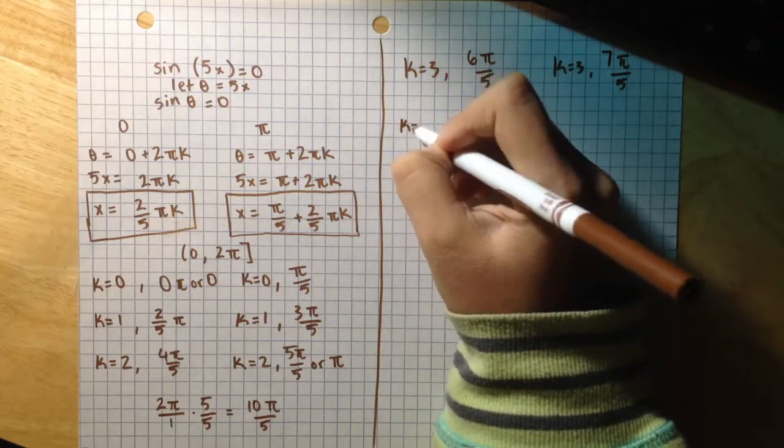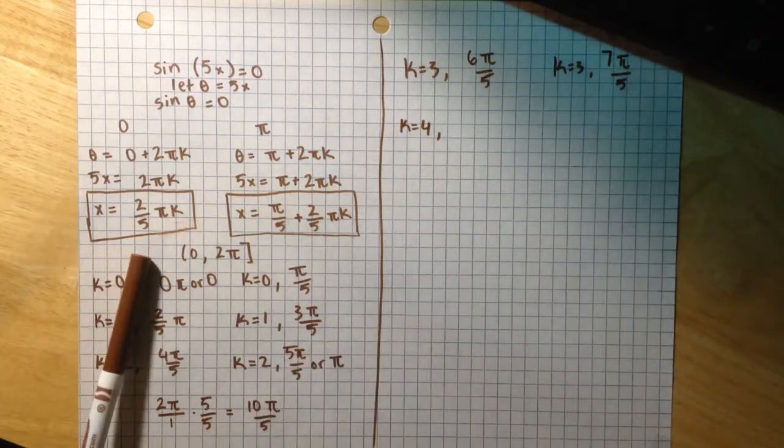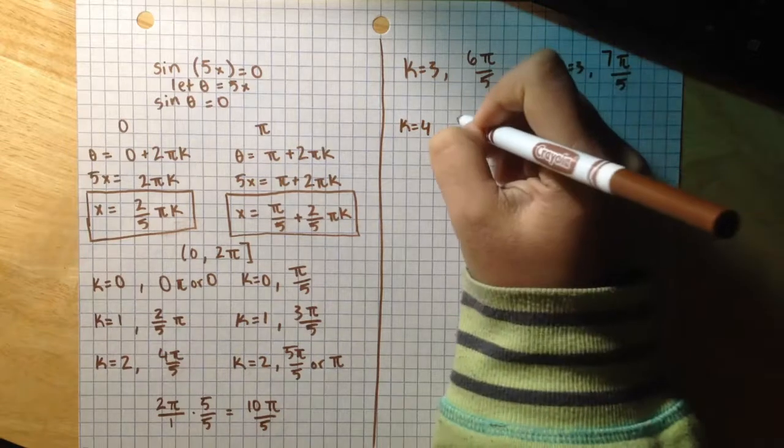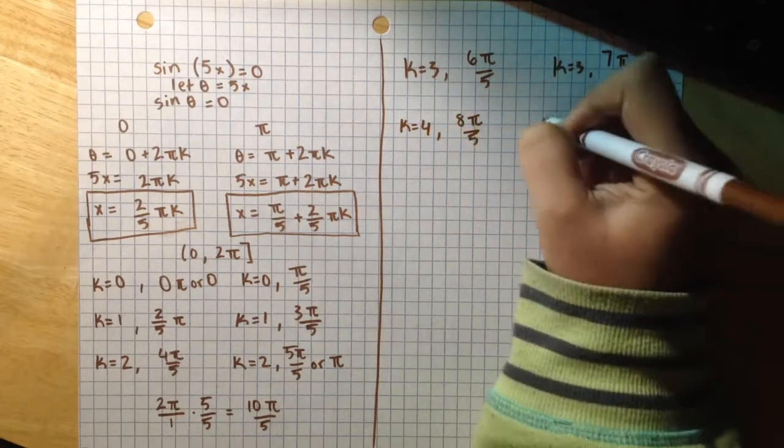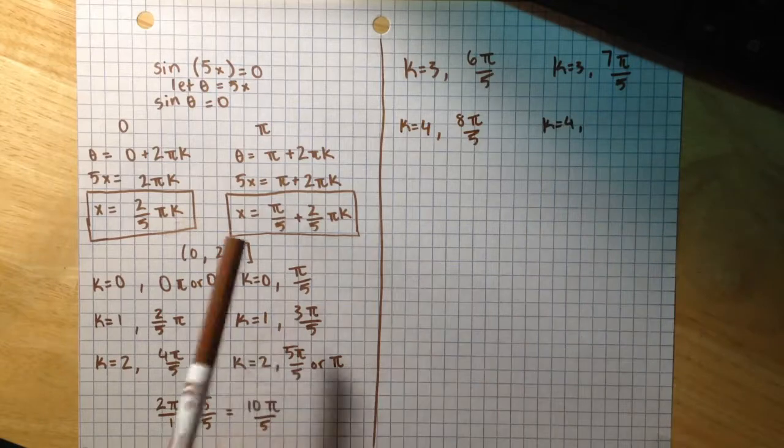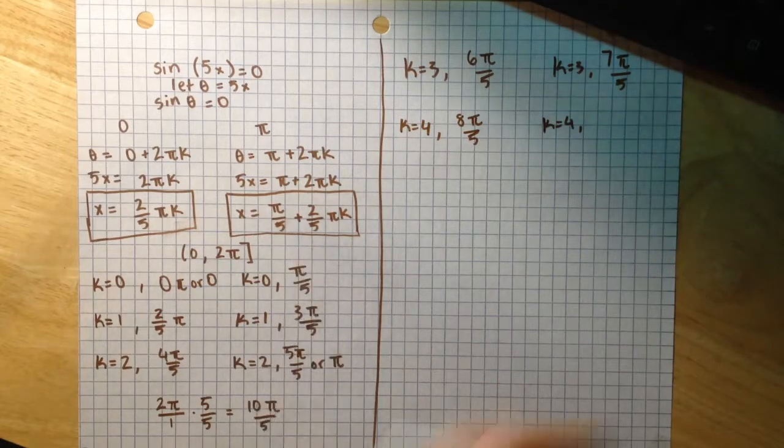k equals 4 into this equation, I get 8π/5. k equals 4 into this equation, I get 9π/5.